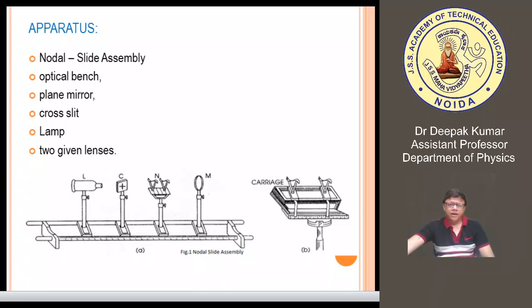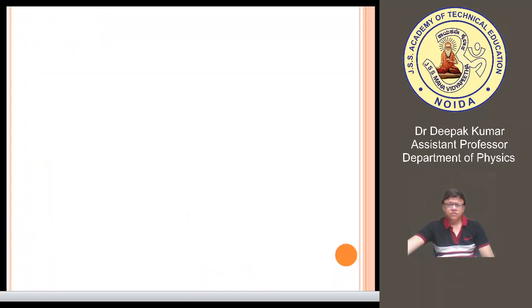There are four uprights in this particular experiment, mounted on an optical bench of approximately 1.5 meters in length. The special carriage which can host up to two lenses on this platform is basically termed as a nodal slide. In this particular experiment we are using this assembly to find out the focal length of a combined lens system and then to find out the cardinal points of that particular system.